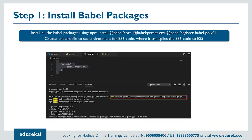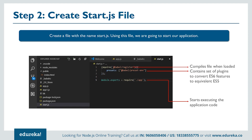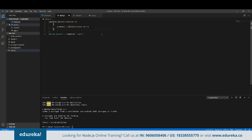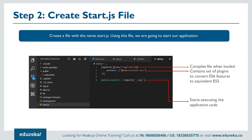We'll create the .babelrc file and put in the required configuration. In start.js, we import Babel register and then import app.js and export it. Basically, start.js tells the application that the whole app has to use Babel — Babel will transpile the whole app when we run it or create a build. Babel register compiles files when loaded, and presets contain a set of plugins to convert ES6 features to equivalent ES5.